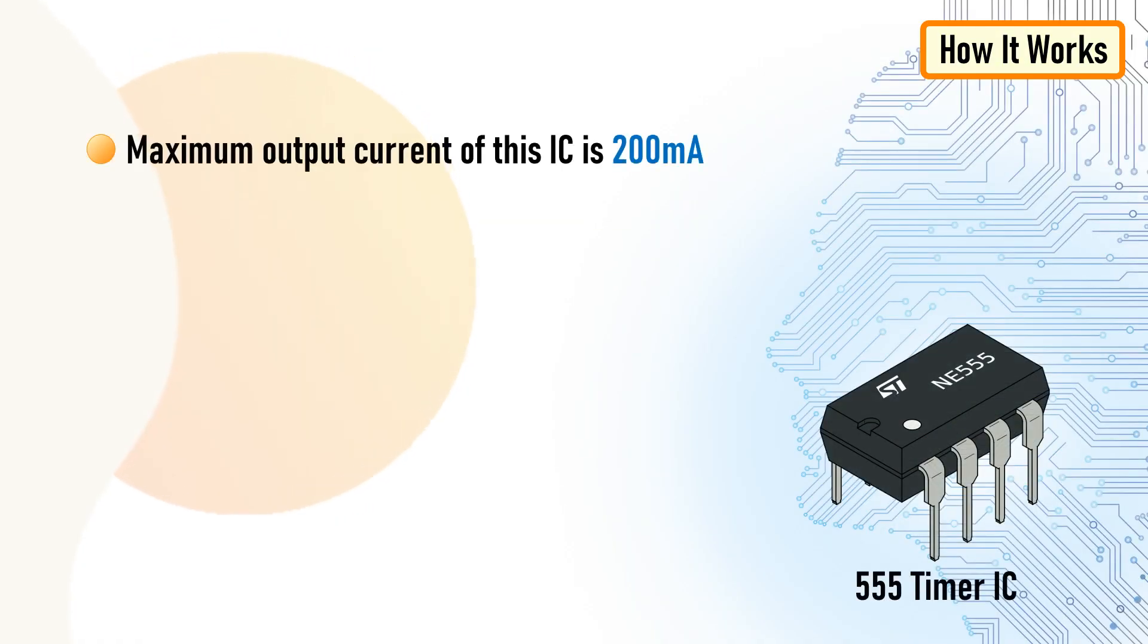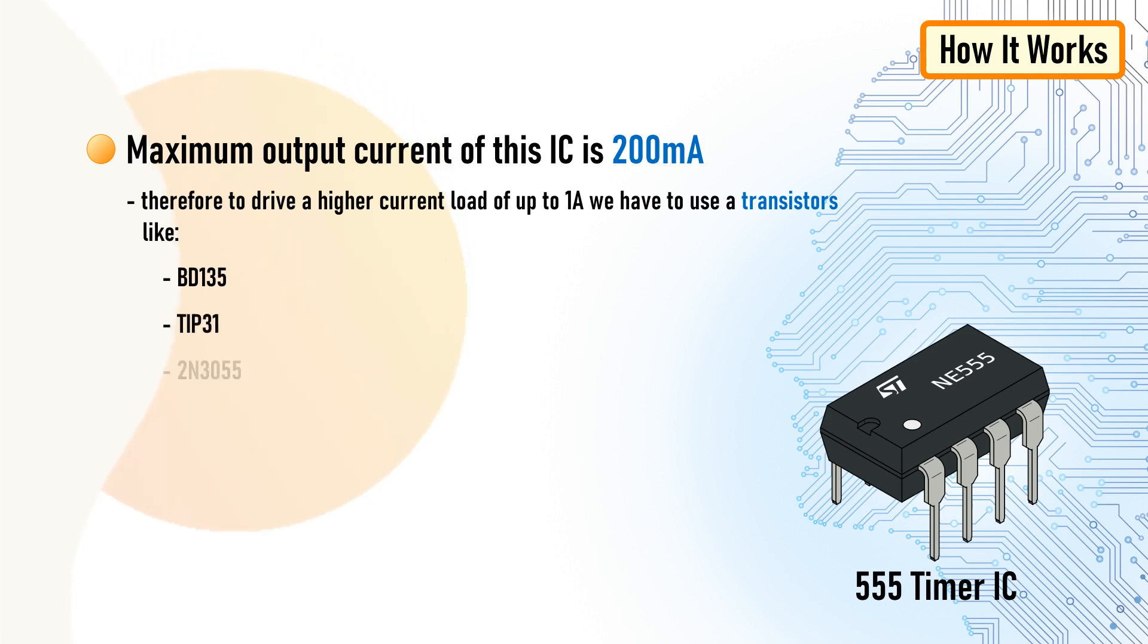The maximum output current of this IC is 200mA. Therefore, to drive a higher current load of up to 1 amp, we have to use a transistor like BD135. For driving a much higher current than 1 amp, you can use other high current transistors like TIP31, 2N3055, etc. with a good heat sink.